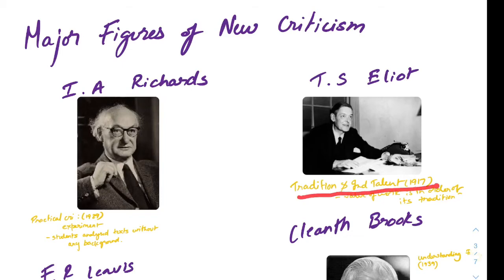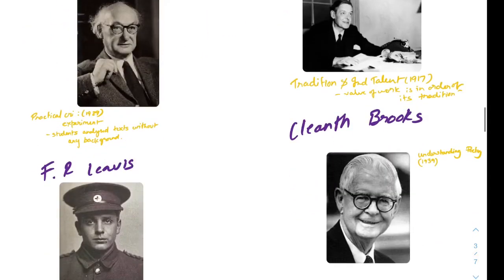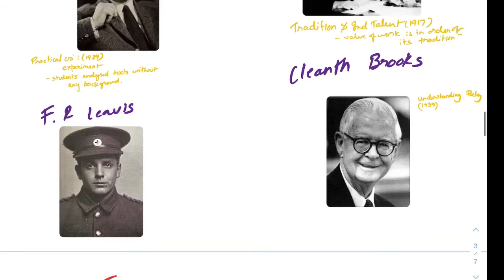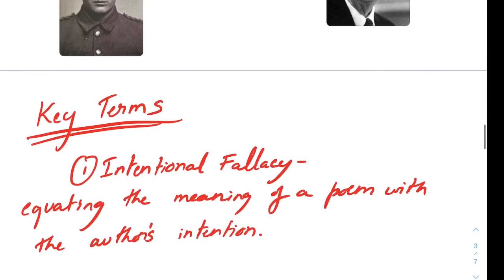Then T.S. Eliot, in Tradition and the Individual Talent, looks at the value of work and the relationship between tradition and individual talent — how the past affects the present, and how the present affects the past — and why knowledge of the past matters but should not be the only thing we look at. Then there's F.R. Leavis, and Cleanth Brooks, who wrote Understanding Poetry in 1939. These are among the key figures in new criticism.